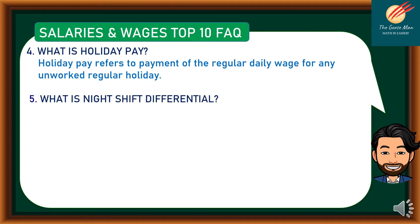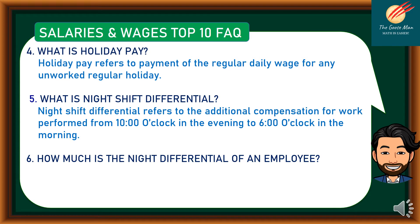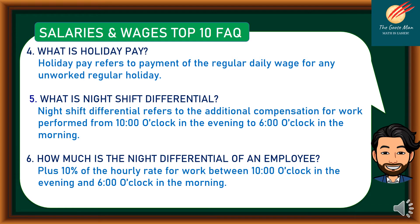Number 5: what is night shift differential? Night shift differential refers to the additional compensation for work performed from 10 o'clock in the evening to 6 o'clock in the morning. For example, if your hourly rate is 100 pesos, there is an increment of 10%, making it 110 pesos per hour. So if you work for 8 hours, you will earn 880 pesos for those 8 hours.